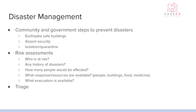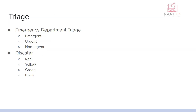Triage is really important in disaster management. Emergency department triage includes emergent, urgent, and non-urgent categories. Emergent — such as a cardiac arrest — needs to be taken care of immediately. Urgent cases can wait for a few minutes. Non-urgent issues are put at the bottom of the waiting list because more urgent cases may be coming in.